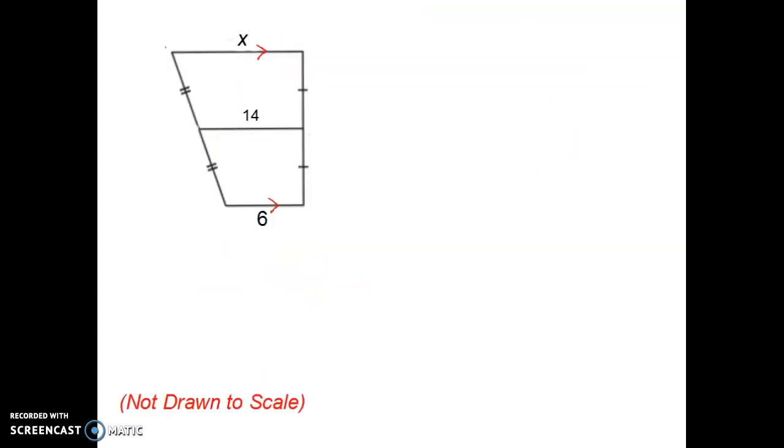Now we're going to use the same thing about the median being the average of the bases. But now we're going to think a little bit differently. The median length is given, but one of the bases is missing. The process won't change. So I'm going to show this. If I were to add my two bases, it would look like 6 plus x. Then I would need to divide by 2 to find its average. And I should get the value of 14.